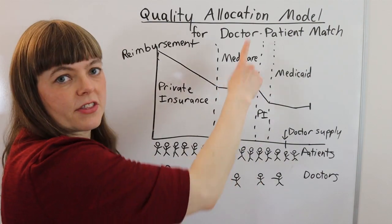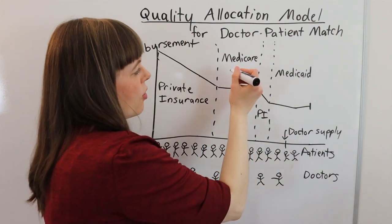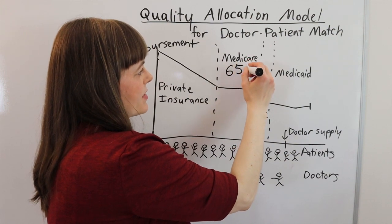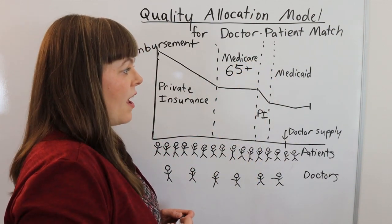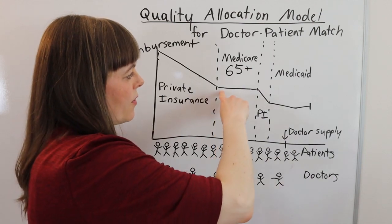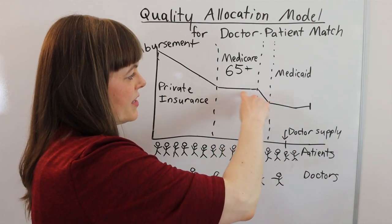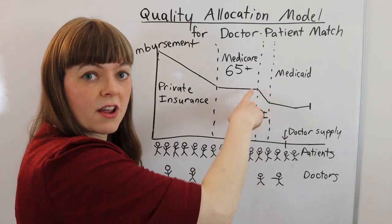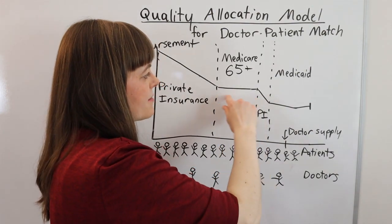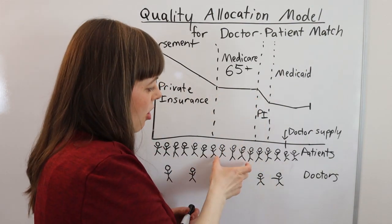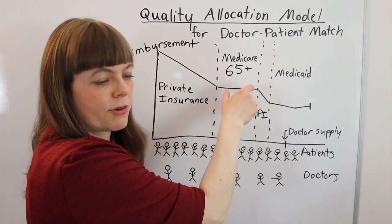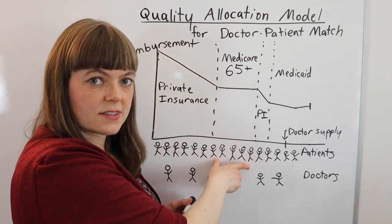Then we have Medicare — in the United States, people over 65 have government health insurance through Medicare, and it reimburses pretty well. That's represented by this flat line here. Medicare has fixed rates for everybody, which is why this line is flat. All of these people are on Medicare and doctors get the same reimbursement rate for all of these patients.